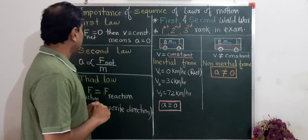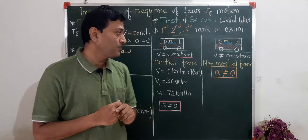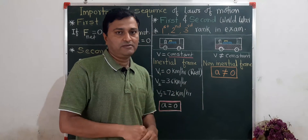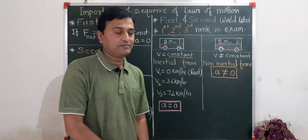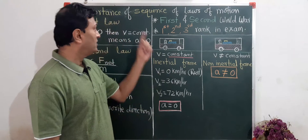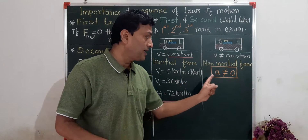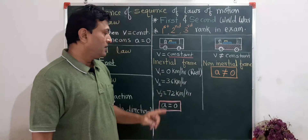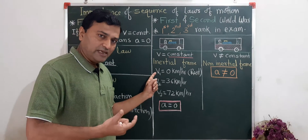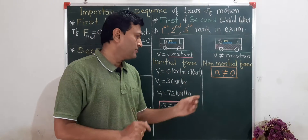Now, I have taken the example of a bus — a moving bus. In this case, velocity remains constant; in another case, velocity is not constant. If velocity is constant, then acceleration is zero, as we learned in the first law. I have taken three situations. First situation: velocity is zero kilometers per hour, meaning the bus is at rest.